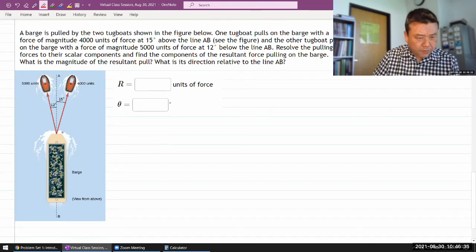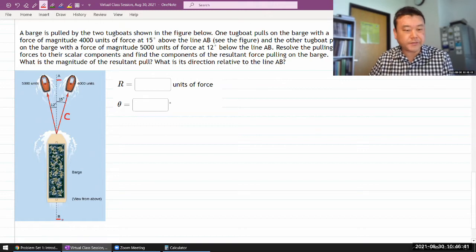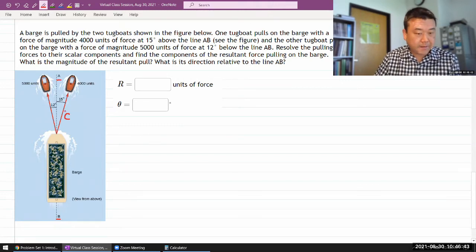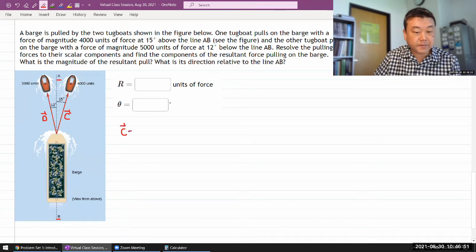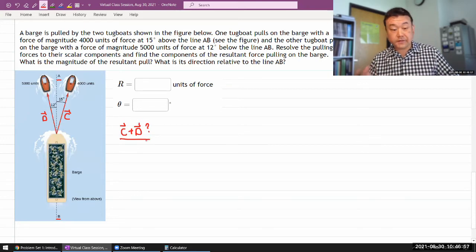I'm going to call this vector C. I see A and B are already in use, so I won't use those letters. Let me call this my vector C, let me call this my vector D. And what the question is asking is what is C plus D basically.